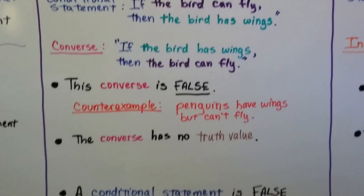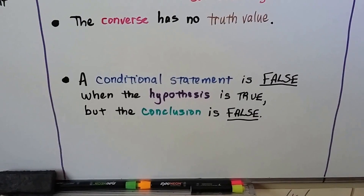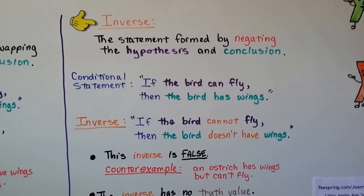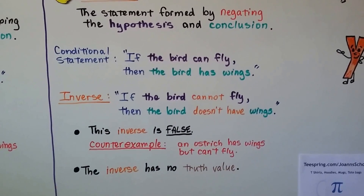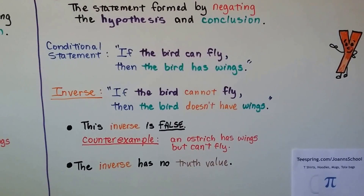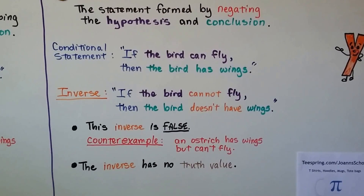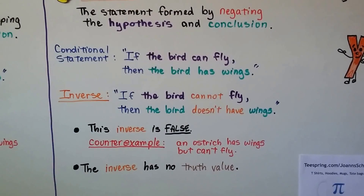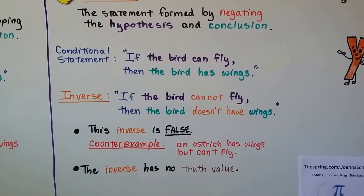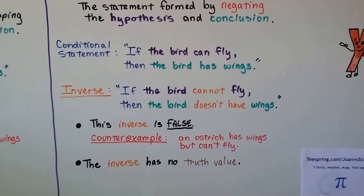A conditional statement is false when the hypothesis is true but the conclusion is false. Inverse is the statement formed by negating the hypothesis and conclusion. Our same conditional statement — if the bird can fly, then the bird has wings — gives the inverse: if the bird cannot fly, then the bird doesn't have wings. This inverse is false. A counterexample: an ostrich has wings but can't fly. Many birds in New Zealand and Australia even have vestigial wings but can't fly. The inverse has no truth value.